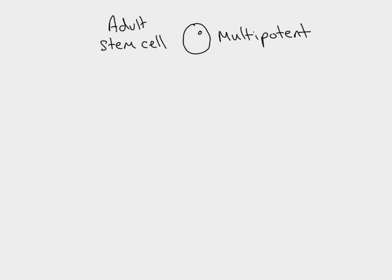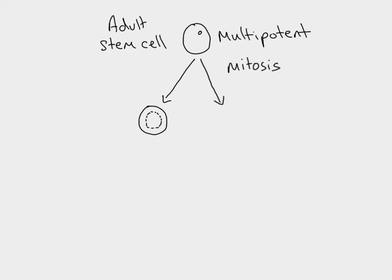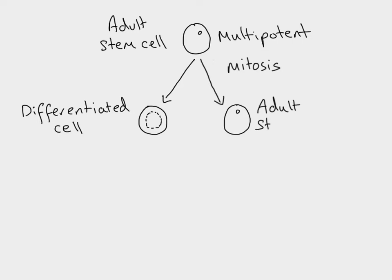When an adult stem cell divides, it does so by mitosis, producing two daughter cells. One of those daughter cells could differentiate and specialize, while the other can remain as an adult stem cell. So from our original stem cell we can end up with a differentiated cell and an undifferentiated adult stem cell. It's also possible for both daughter cells to remain undifferentiated, or for both to differentiate, but the important point is that some adult stem cells will always produce daughter cells which stay undifferentiated.